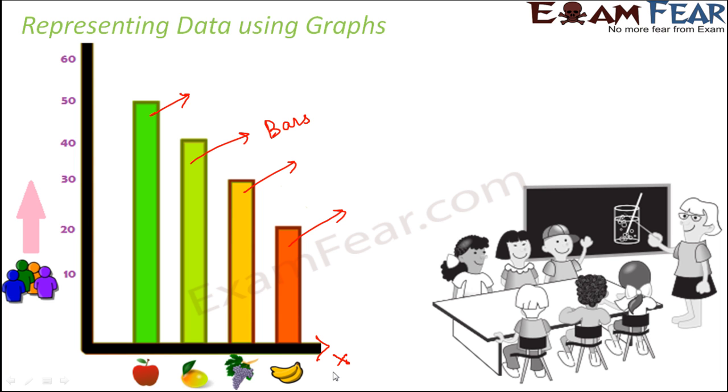We have two axes in this case. A horizontal axis which is called the x-axis and the vertical axis which is called the y-axis. On the horizontal axis we have represented the possible options for fruits, and on the y-axis we have represented how many students like each of those.